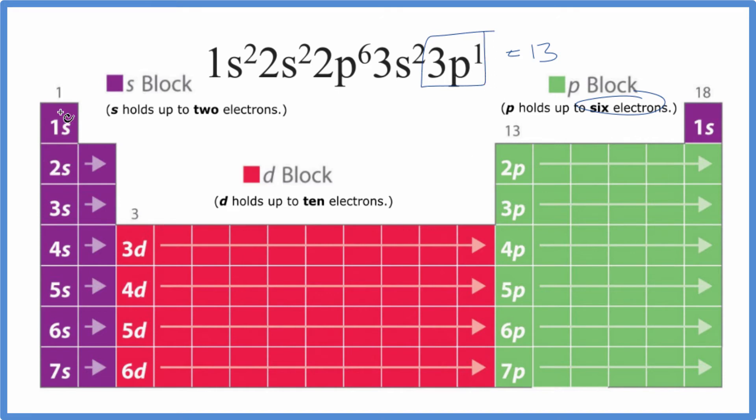So we're looking for 3p1. So we go over to 3, over to the P block. Right here is 3p1. So the element we're interested in is right here. And it'll have this electron configuration.